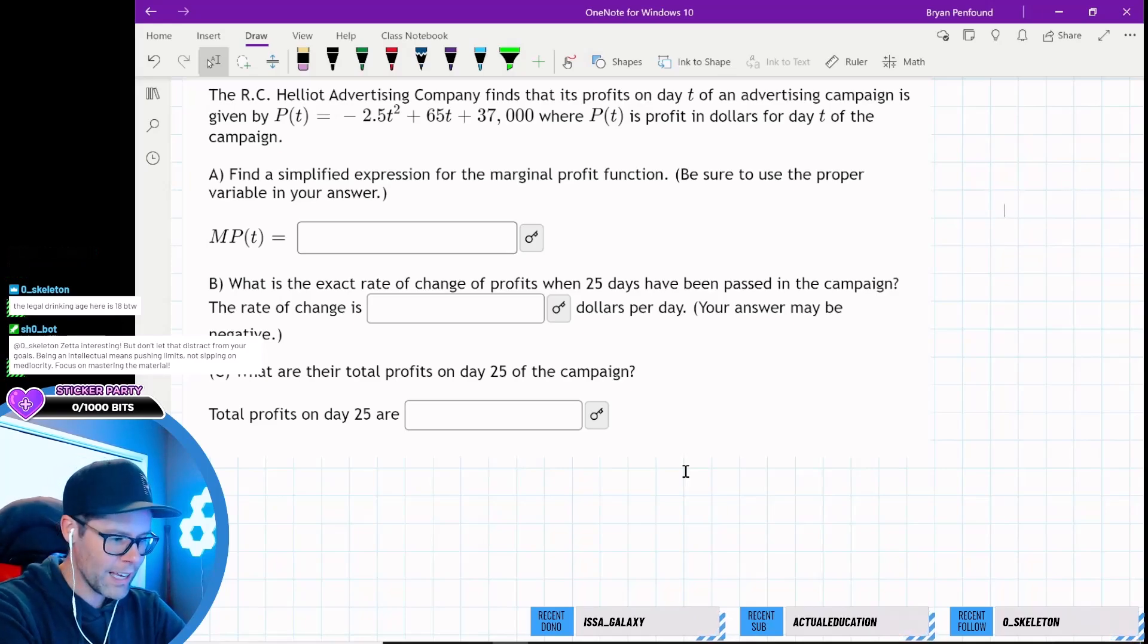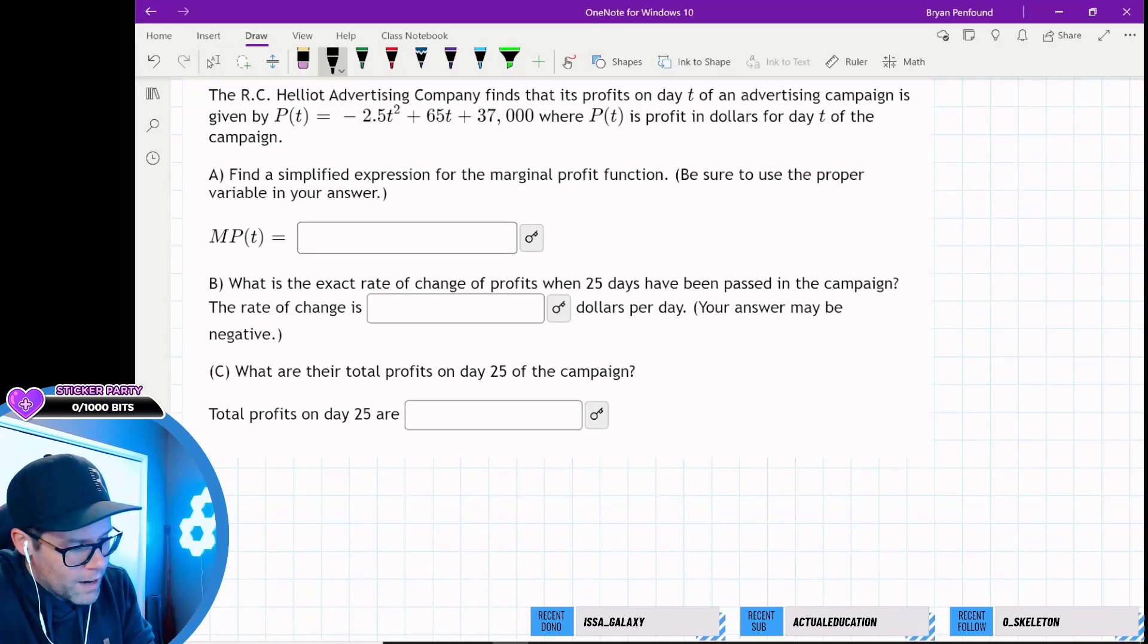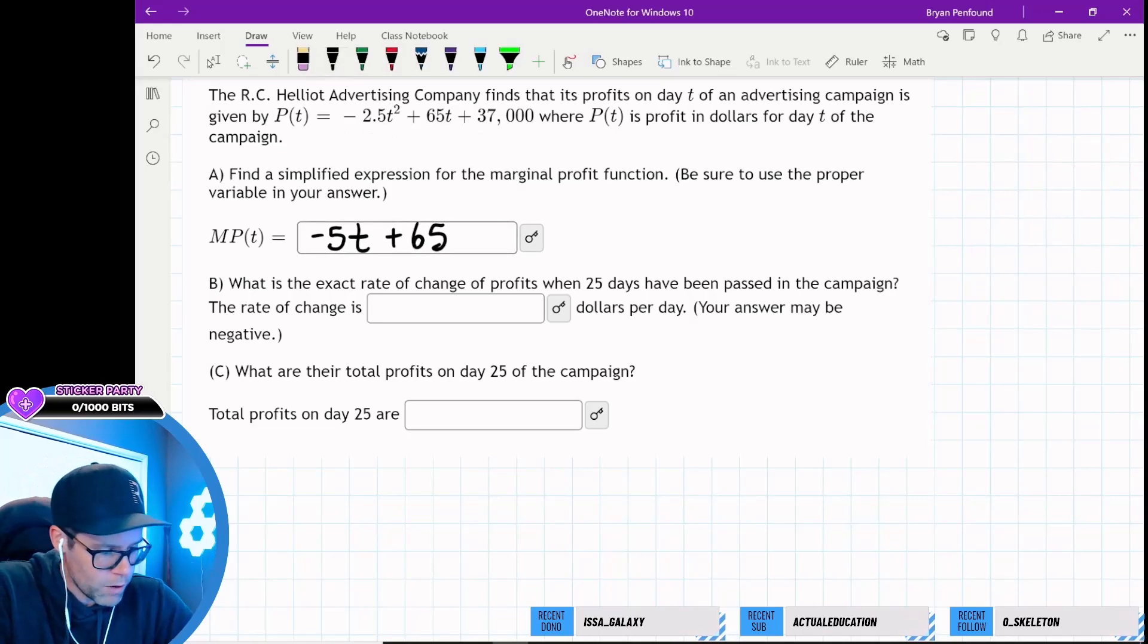So the RC Helliot Advertising Company finds that its profits on day T of an advertising campaign is given by, where P is profit in dollars for day T. Okay, so that's our profit function. Find a simplified expression for the marginal profit function. So we just need to find the derivative of our profit function, which should be 2.5 times two, so negative five T plus 65. So there's the derivative of our profit function, that's our marginal profit.